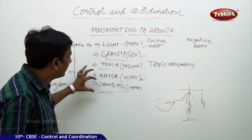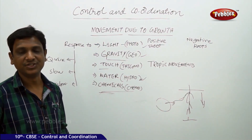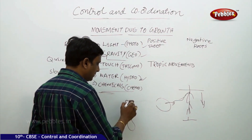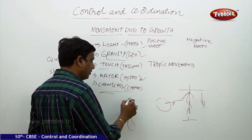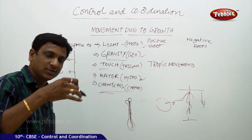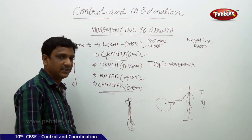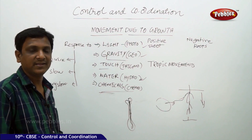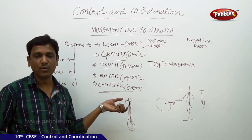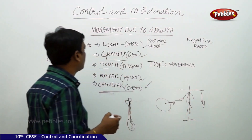The other tropism is chemotropism — movement in response to chemicals. An example is the process of fertilization in a flower. When the pollen grain reaches the stigma, the pollen tube grows downward and extends into the ovule and ovary. How does it know the direction? It is because of the chemicals present inside the ovary. The tropic movement towards chemicals is called chemotropism.